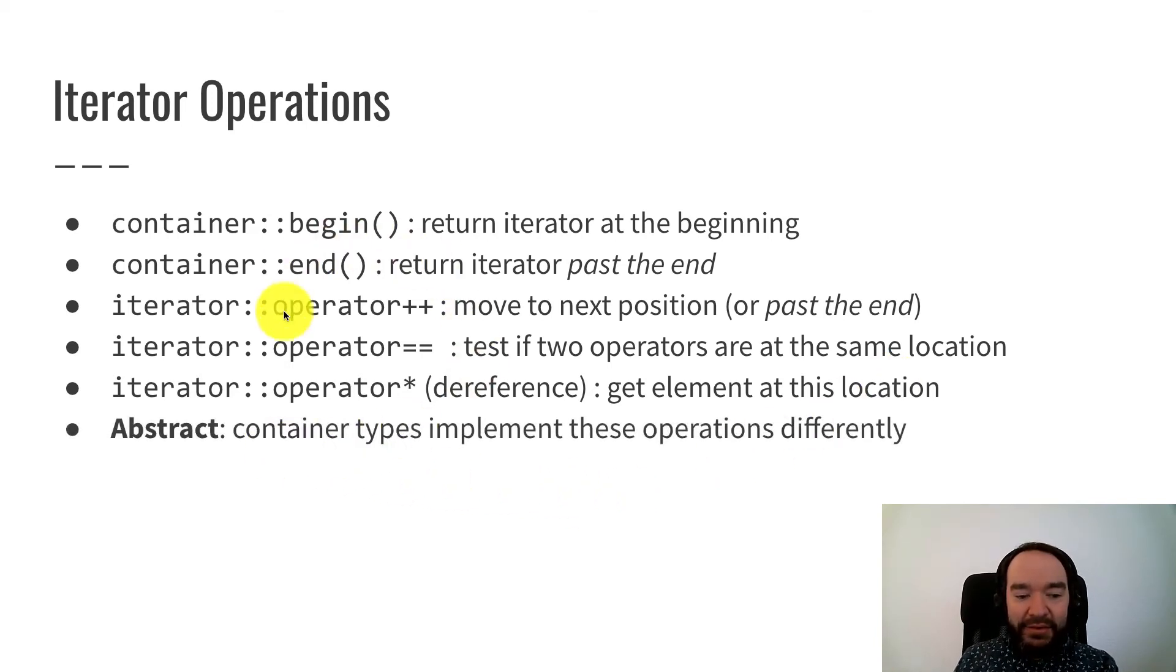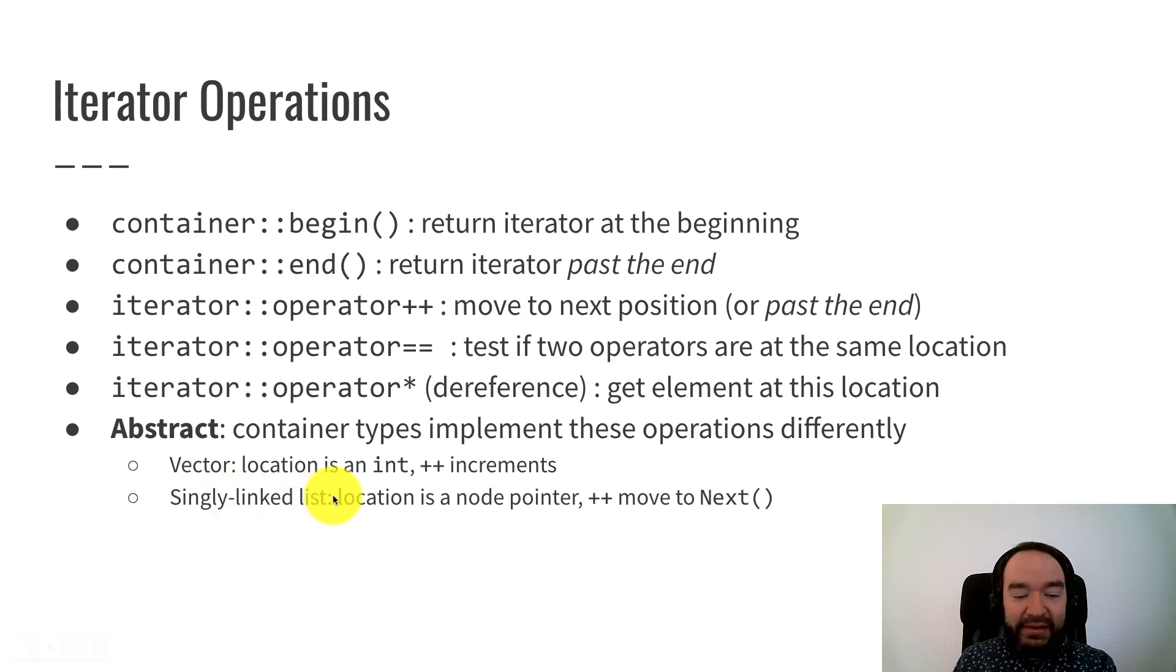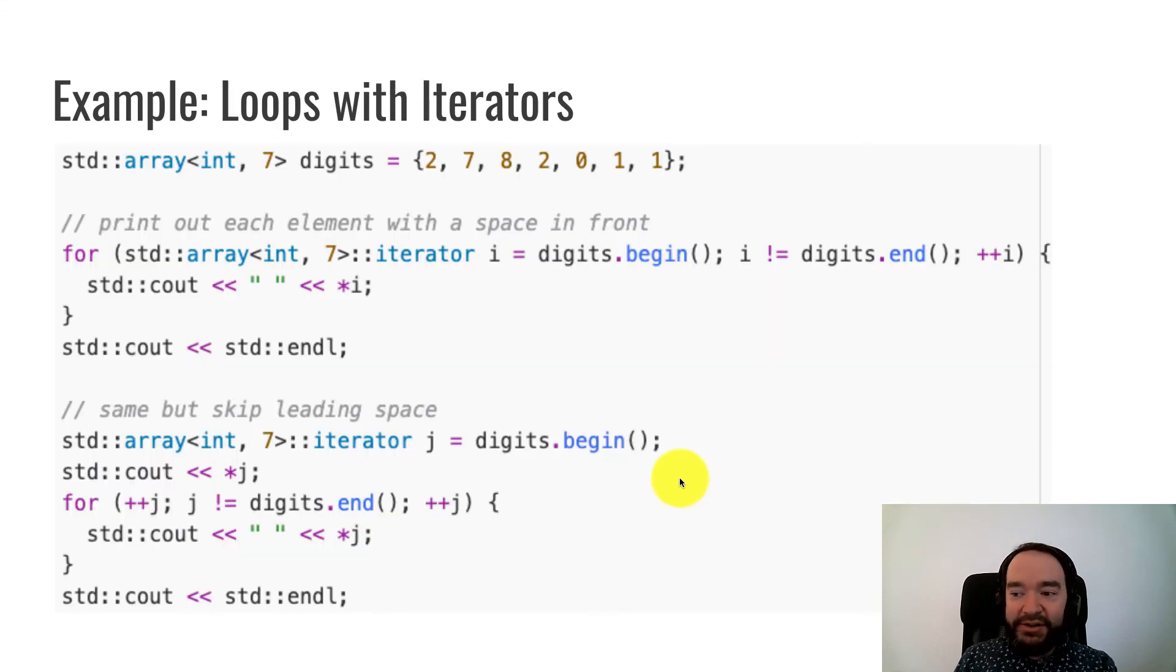Now, these are abstract operations, meaning that different container types implement them differently. Basically, every iterator has a plus-plus, equal-equal, and dereference star operator, but the code for that can be substantially different, and we'll explore that later in the course. So for example, the vector implementation might store the location as an int index, and plus-plus increments that index. And a singly linked list iterator works on a very different principle. The location is a pointer to a node object, and plus-plus follows the node's next pointer. We'll get into that pretty soon.